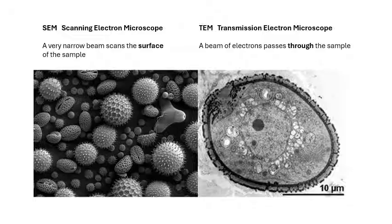There are two types of electron microscope that you need to know about, and you need to know the differences between them. You've got a scanning electron microscope and a transmission electron microscope. The main difference is the scanning one — we're looking at the surface of the sample. The transmission one — the beam of electrons actually goes through the sample, and you gain information from the electrons afterwards. So scanning is surface, and transmission is through the sample.